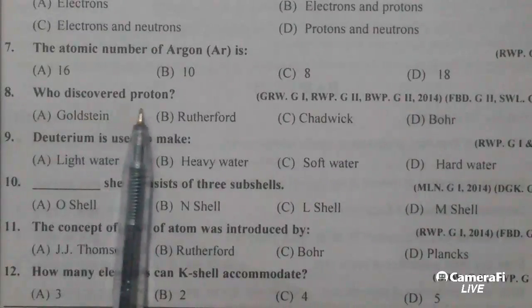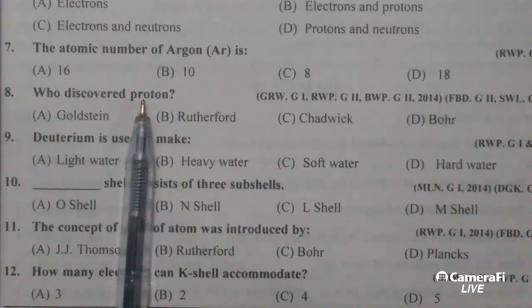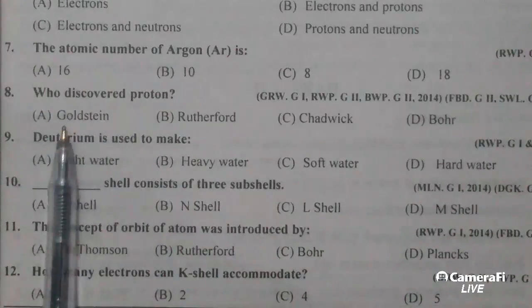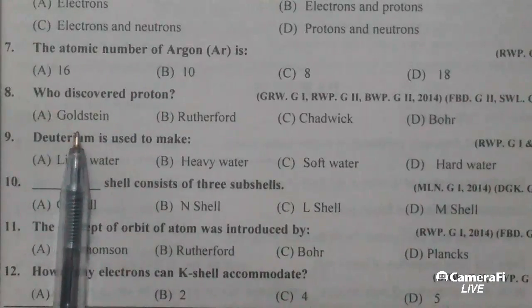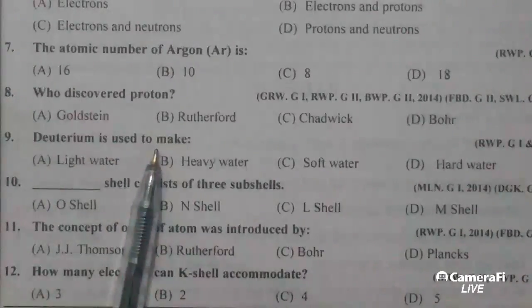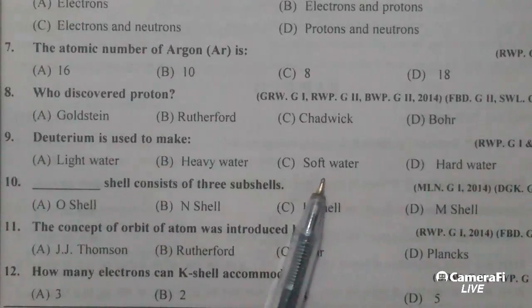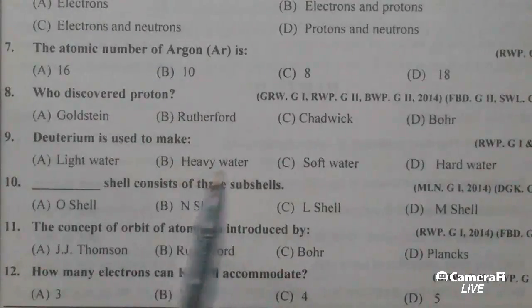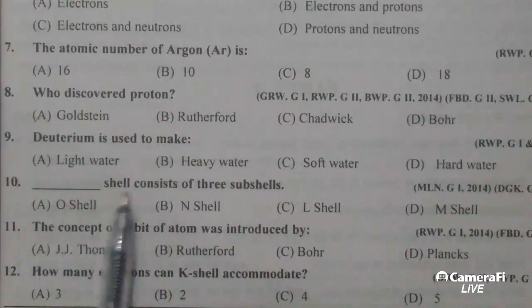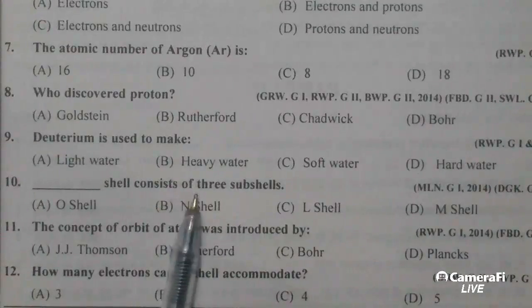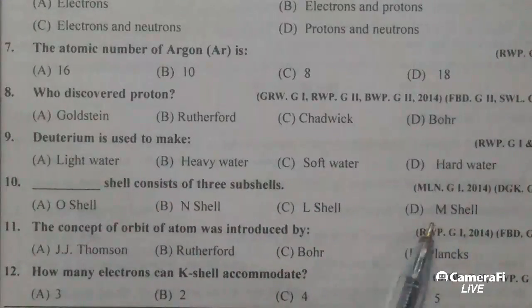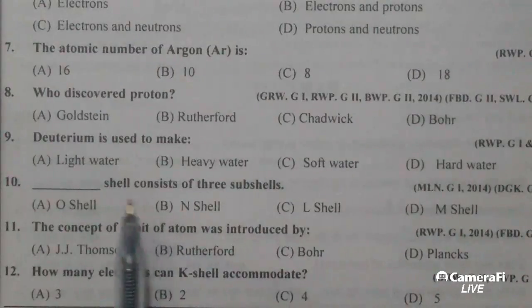Who discovered proton? Goldstein discovered proton. Deuterium is used to make heavy water. M shell consists of three subshells.